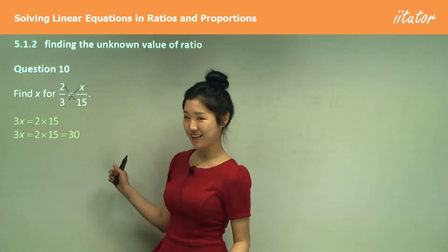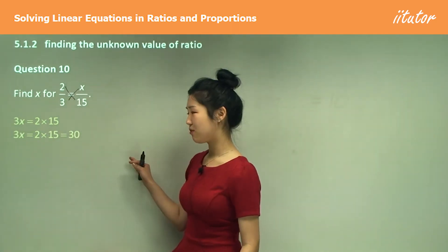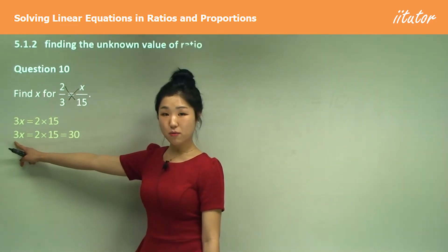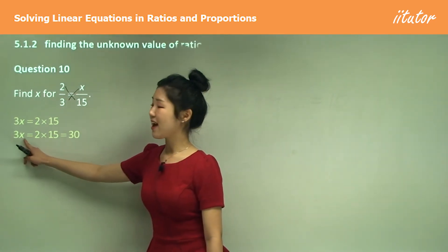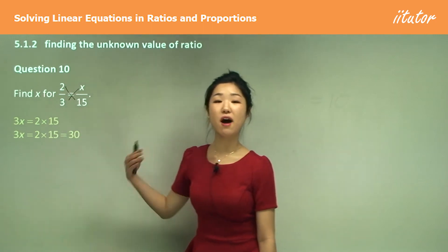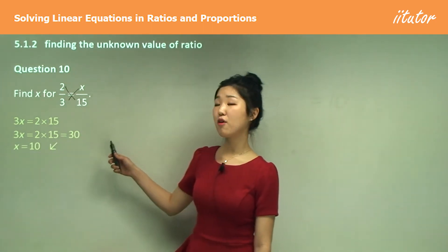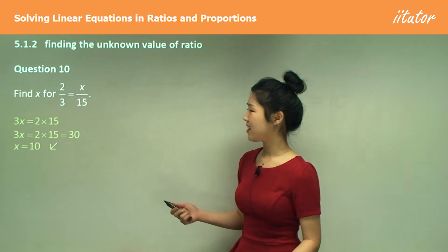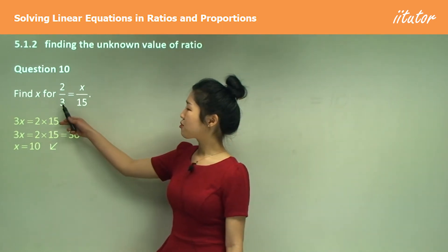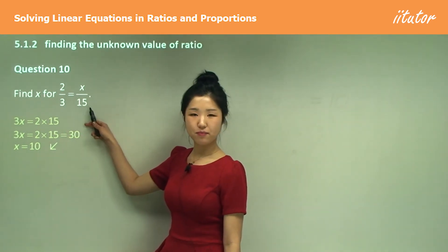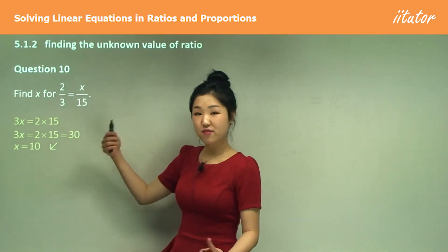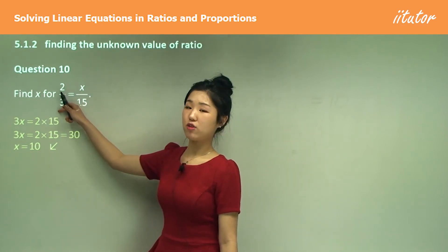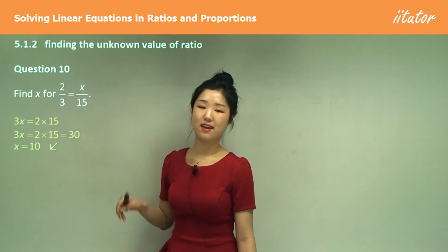First, 2 times 15 is 30. To get x, divide both sides by 3, so x equals 30 over 3, which is 10. You can also think of it as: 3 times what gives 15? That's 5. So do the same to 2 — 2 times 5 is 10.